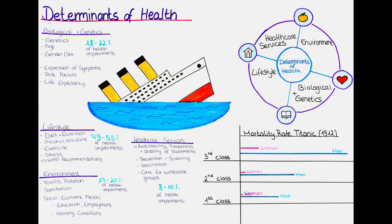The second determinant of health is the lifestyle determinant. Lifestyle determinants of health are related to individual lifestyle choices, such as diet, salt intake, exercise, psychosocial stress, smoking, alcohol consumption, and drug use. These behaviors can have a direct impact on an individual's health and are therefore important factors to consider when examining health outcomes.